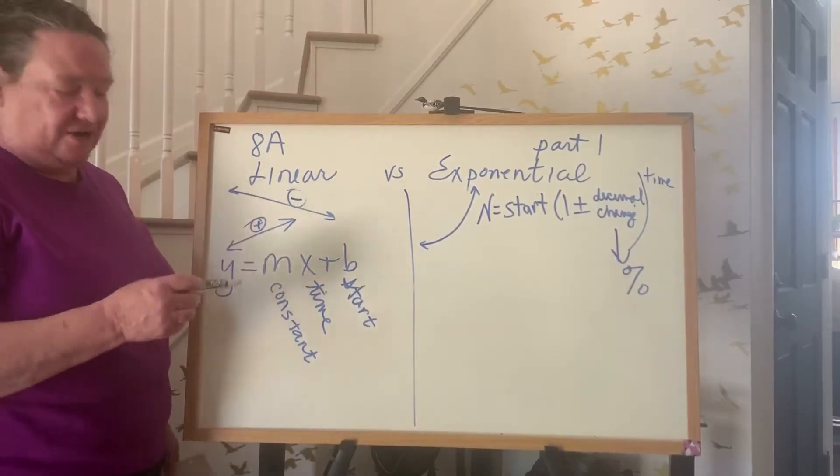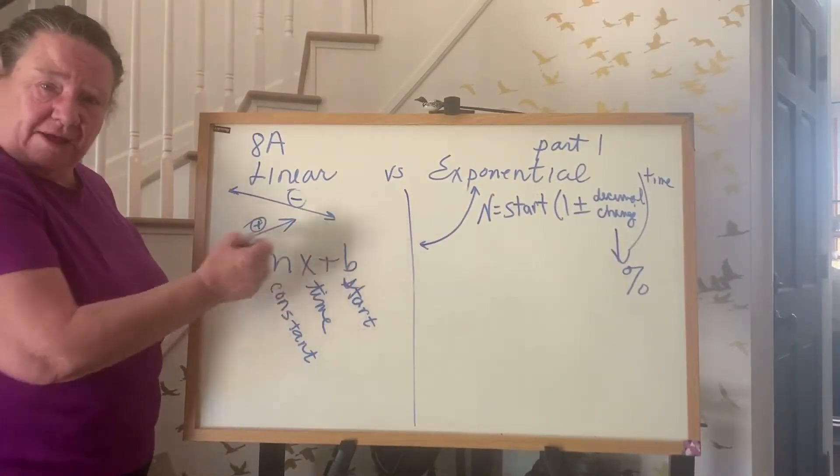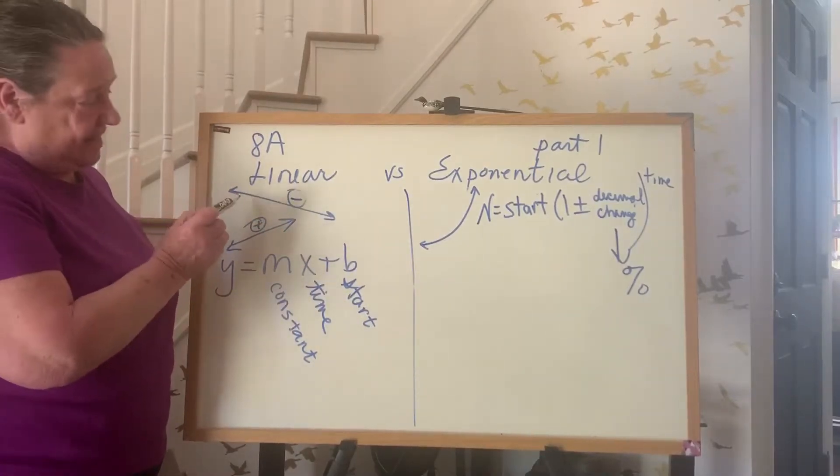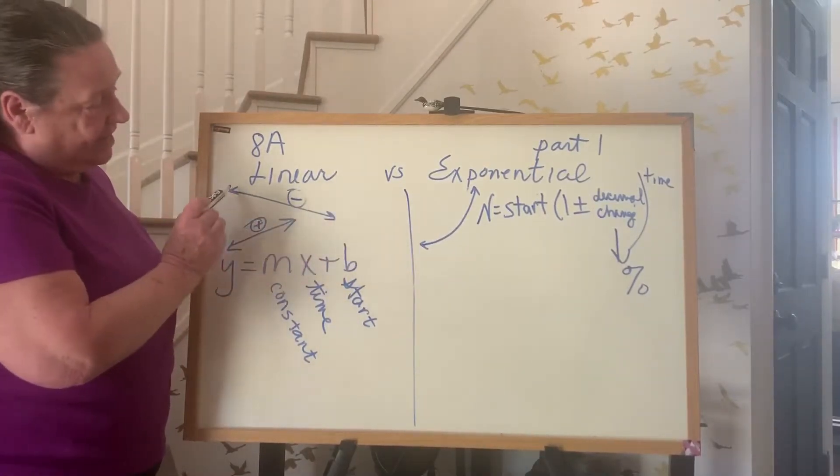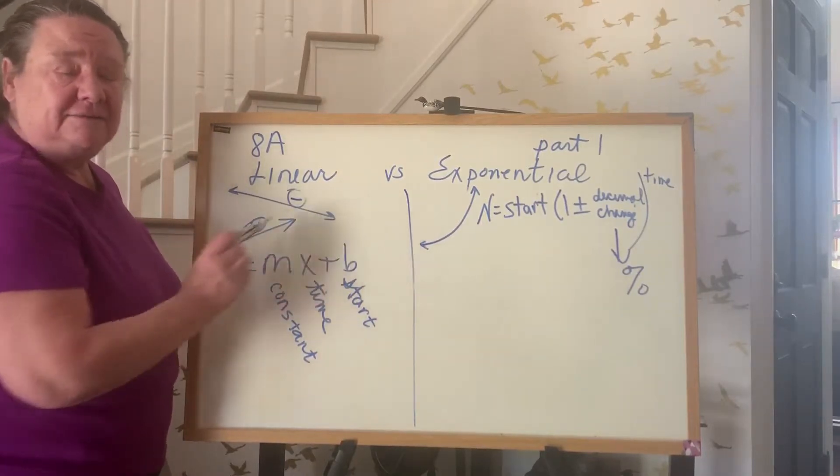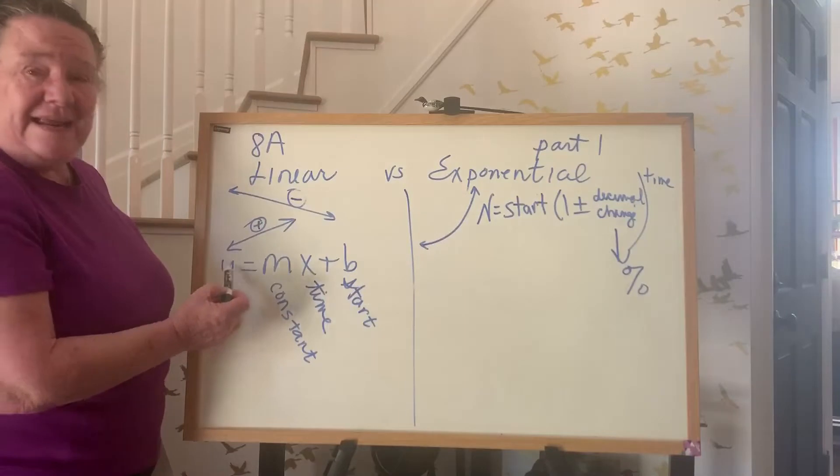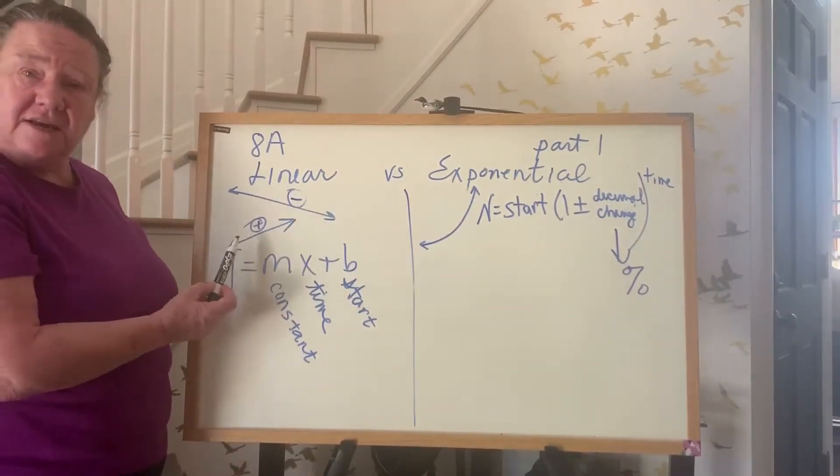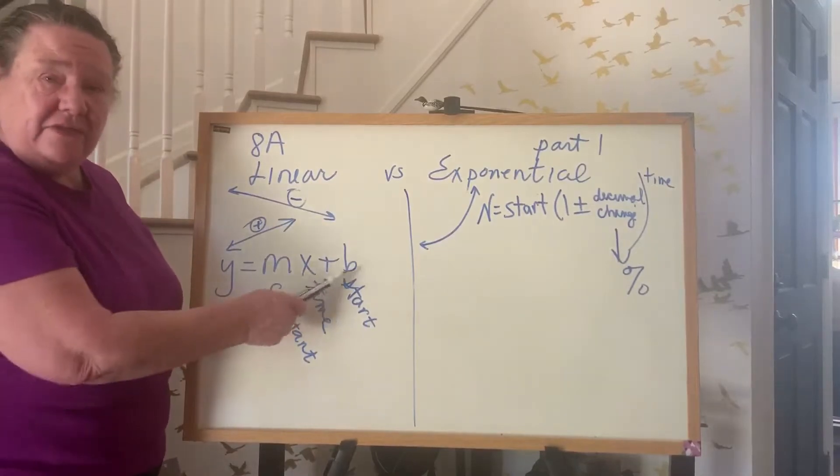A linear equation, your favorite one from algebra, y equals mx plus b, has a straight line graph. Either decreasing, falling, or an increasing graph. Negative slope, positive slope.